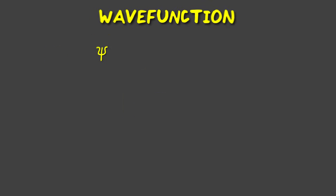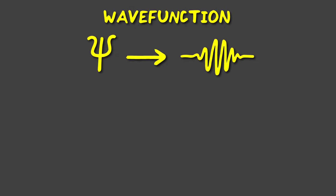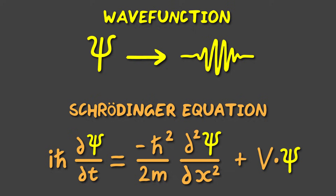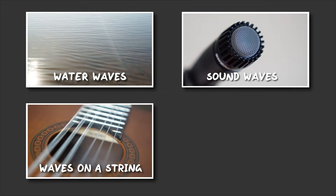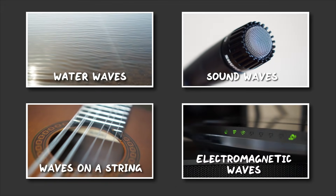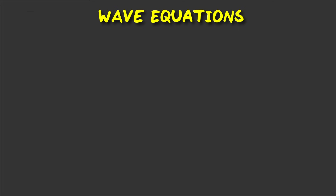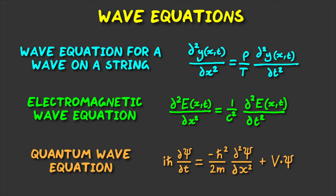In quantum mechanics, particles are things we only see when we measure them, but how they move around is described by a wave function — a wave function that satisfies the Schrödinger equation. It's important to note that wave functions are not unique to quantum mechanics. We use wave functions in many other systems, like the motion of ripples of water, sound waves, vibrations on a string, or electromagnetic waves. Each of these systems has their own wave equation, which all express the change of the wave function in space and time.